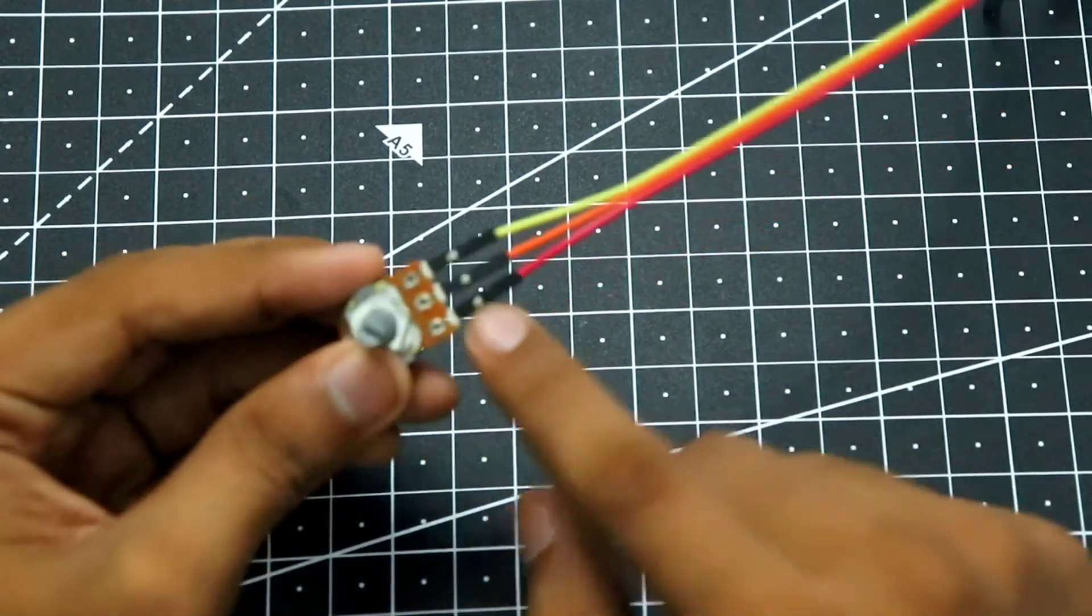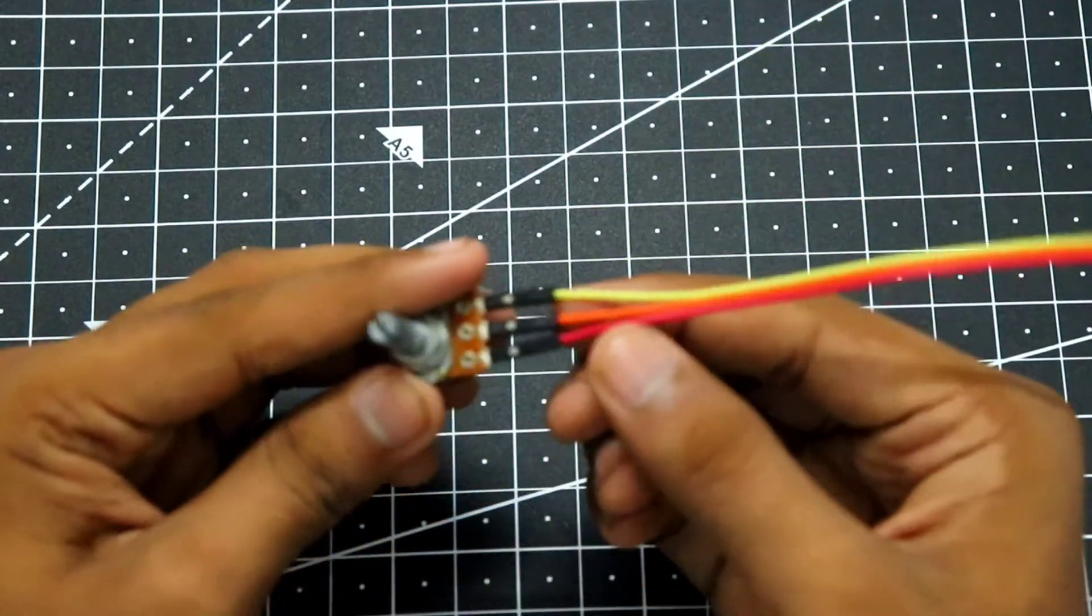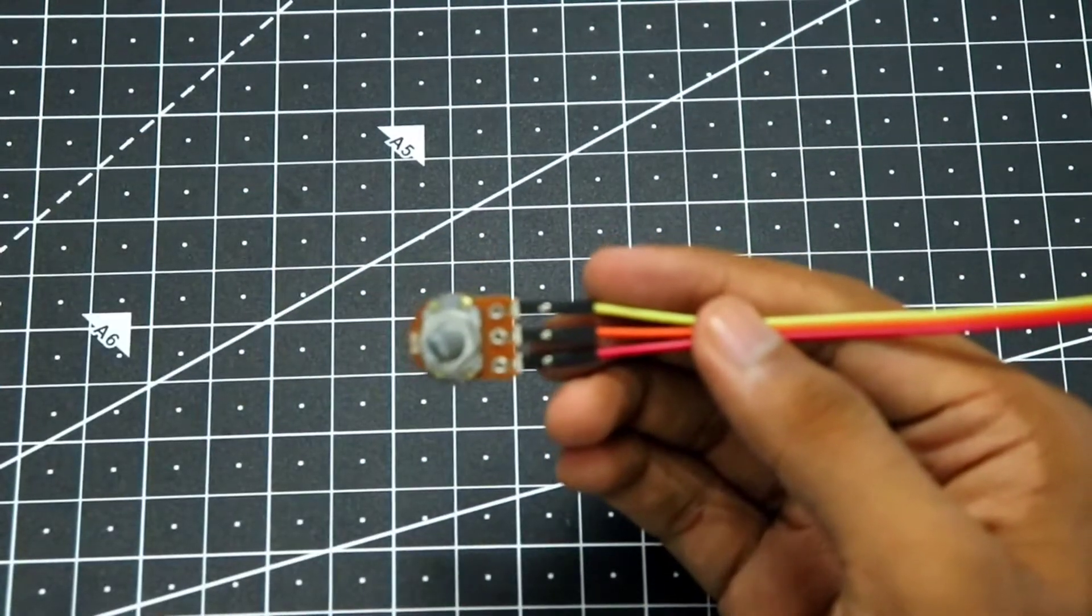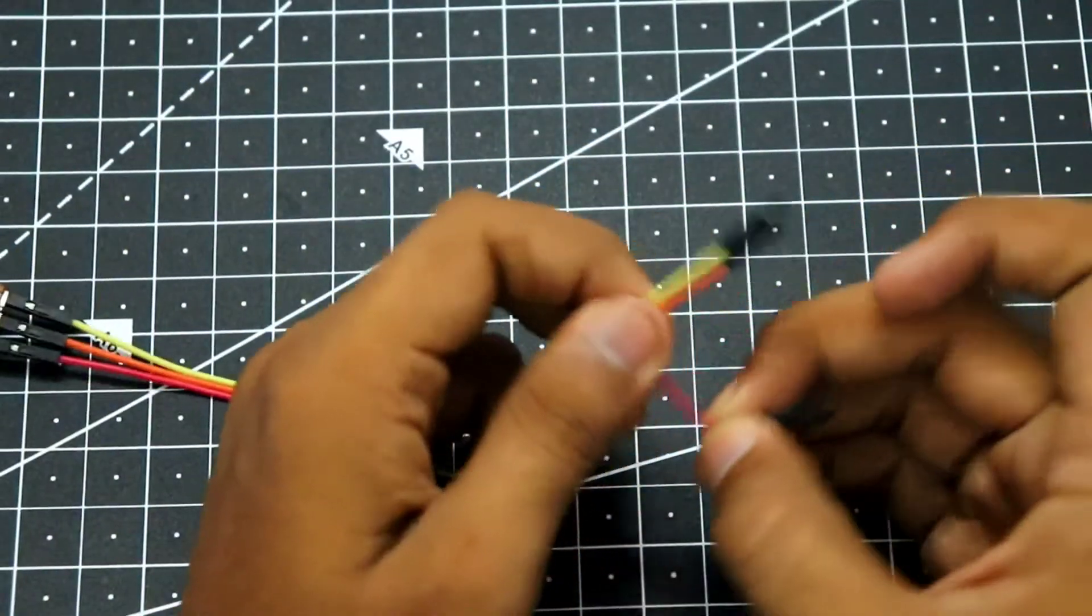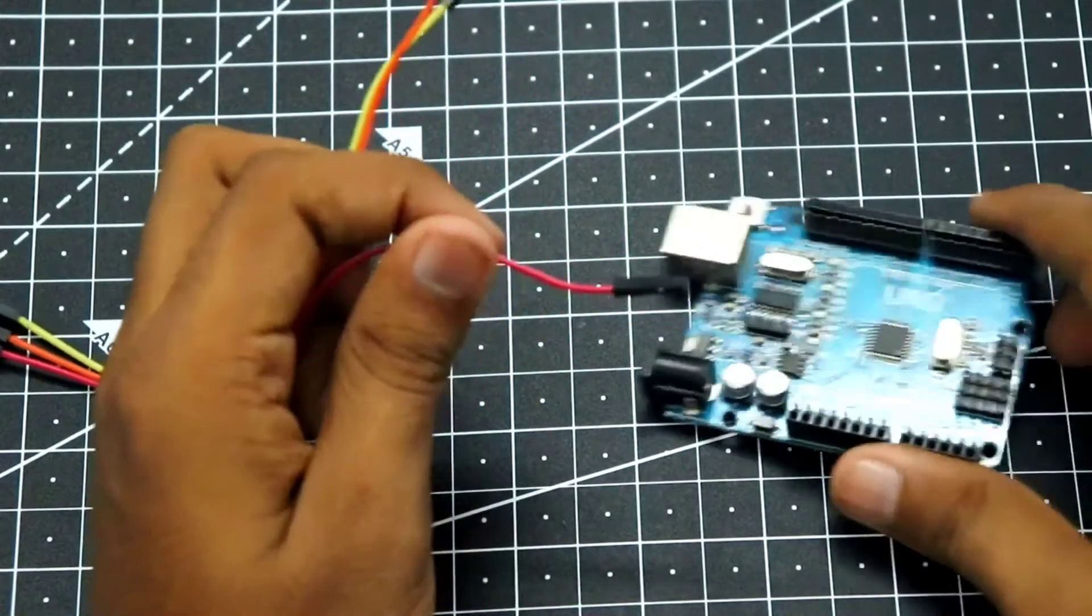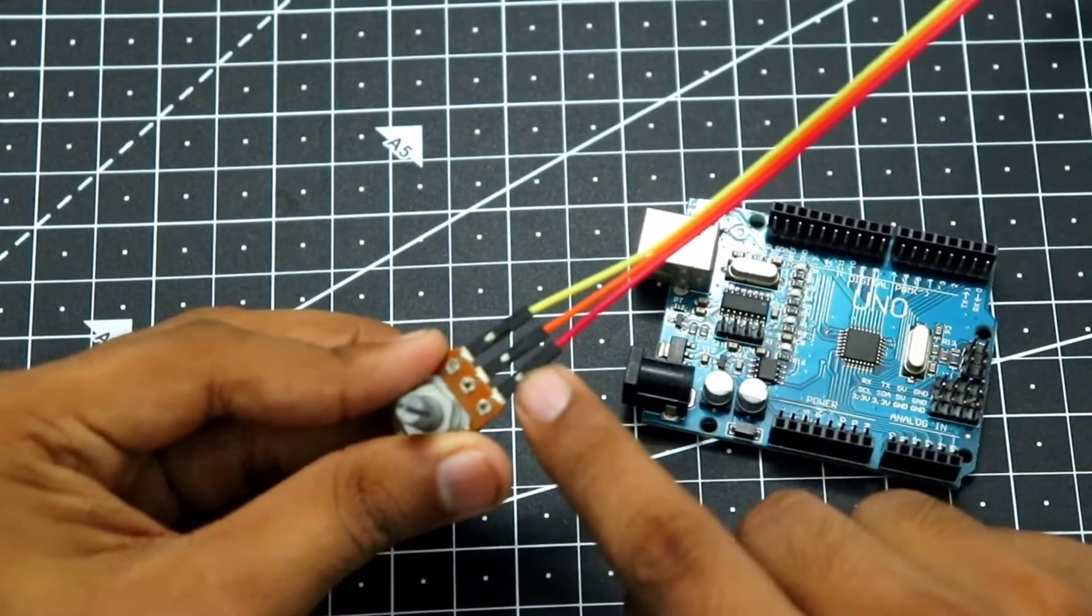The red pin will be our plus 5 volts. The yellow pin will be our ground and the orange wire will be our signal pin. Let's connect the red pin to the Arduino, the plus 5 volts.